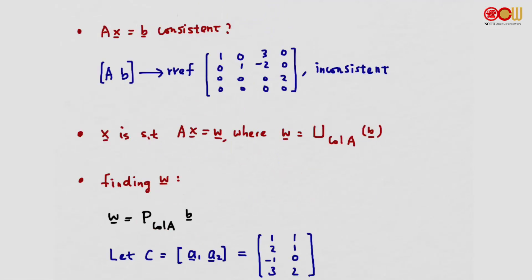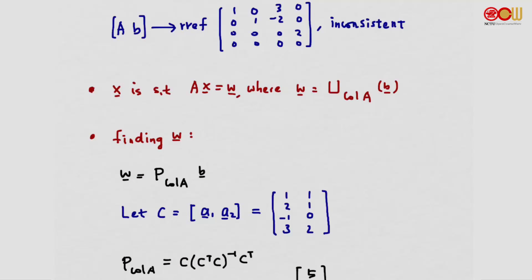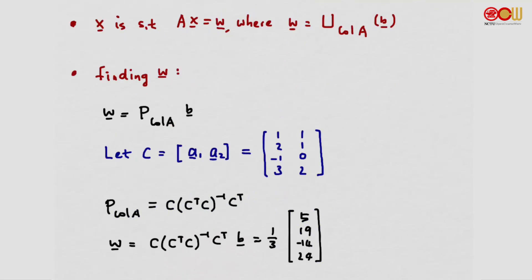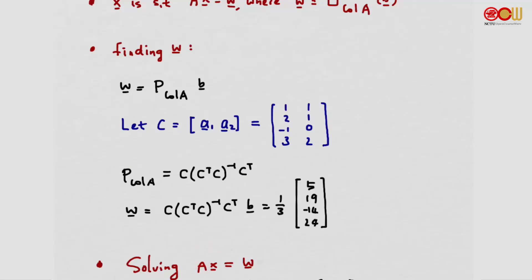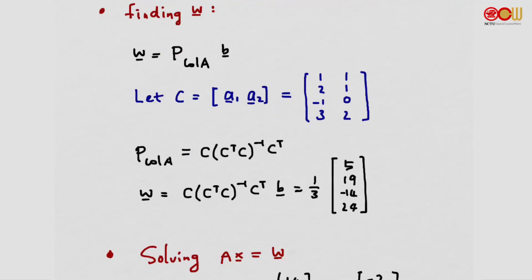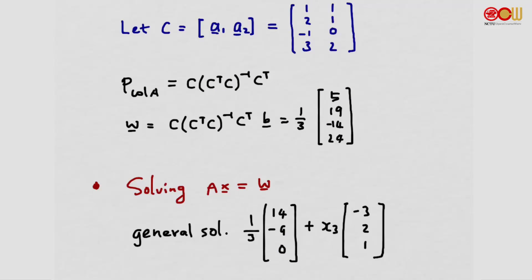Let the basis be a1 and a2, the first two columns of A. The orthogonal projection matrix can be written in the standard form, and w is the product of that matrix with b. Working out the numbers gives us the vector w. With matrix A and vector w, we solve the system of linear equations and obtain the general solution: a particular vector plus a free variable x3 times the vector (-3, 2, 1). There are infinitely many solutions.